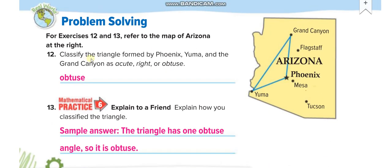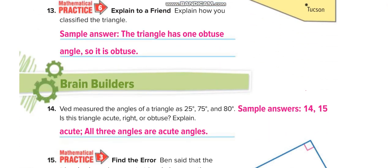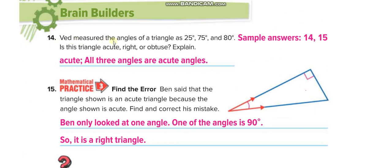Classify this triangle: you can see the angle is more than 90 degrees, so it is an obtuse triangle — because it has one obtuse angle. For a triangle with angles measuring 25°, 75°, and 80°: all three angles are less than 90 degrees, so it is an acute triangle. Note that 25 + 75 + 80 = 180 — the angles inside a triangle always add up to 180 degrees.